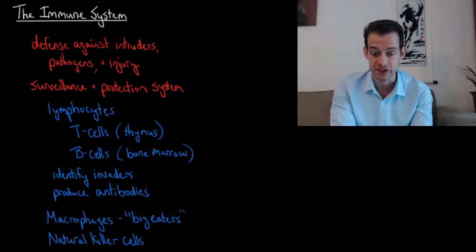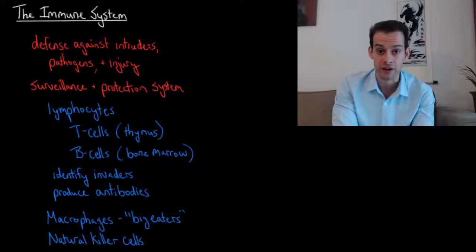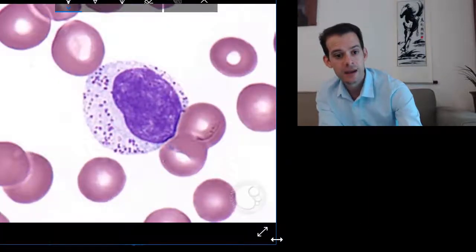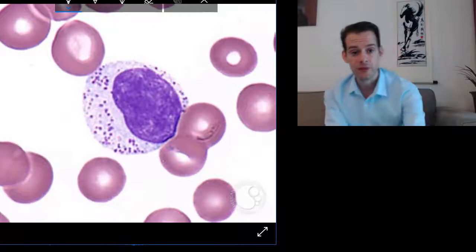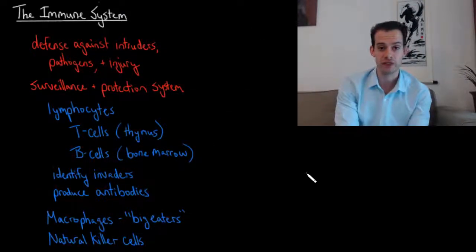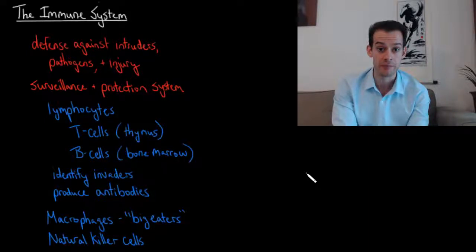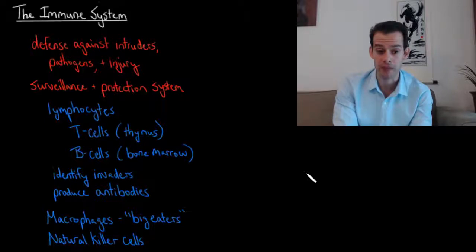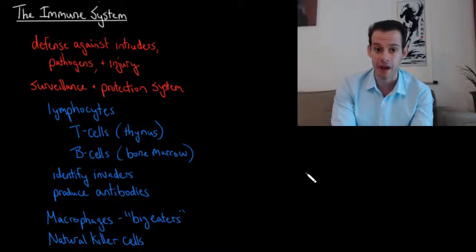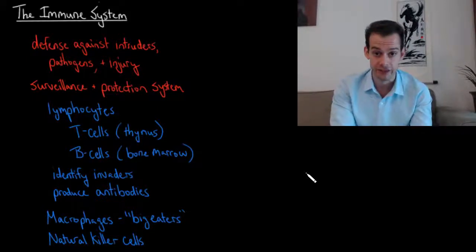It does this through a number of different types of cells and one of these types of cells are lymphocytes. These are white blood cells and here's a picture of a lymphocyte here. And these lymphocytes come in two main types. There are T cells and B cells. T cells refer to lymphocytes that are originating from the thymus and B cells refer to lymphocytes that originate from the bone marrow. And what these lymphocytes do is they're able to identify invading cells and then they produce antibodies that can help us to fight off these invaders.